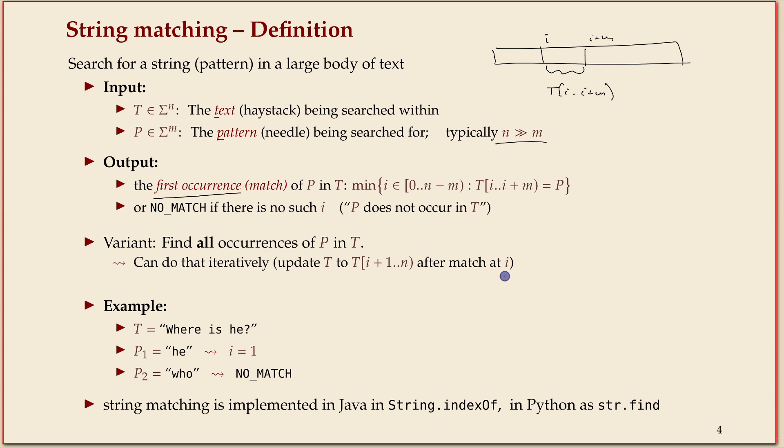Let's do a tiny example. Here's your very long text: "where is he". If you ask for the pattern "he," then the first occurrence is here, and that starts at index one. Remember, we start with zero. If I ask for "who," the result should be no match.